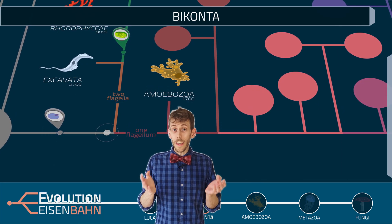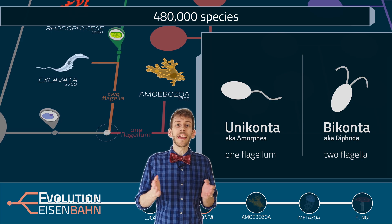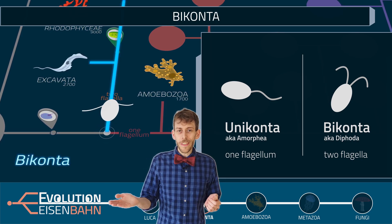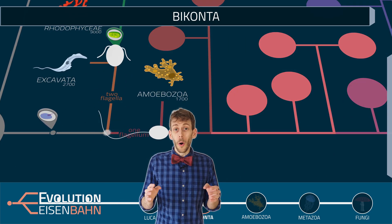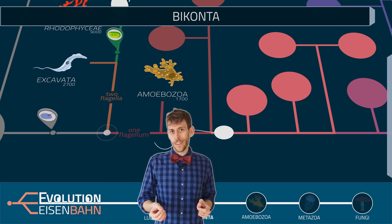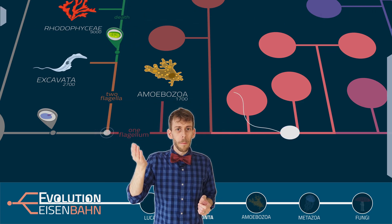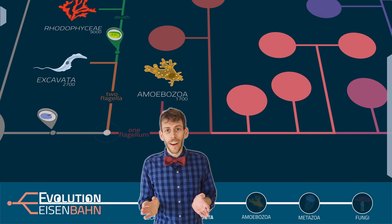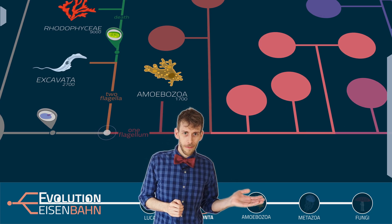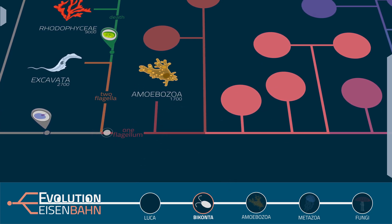And here the eukaryotes split into two main lines, the bicons and the unicorns. All plants are bicons, so they branch off here. But since we are on our way to the fungi, we will follow the unicorns.